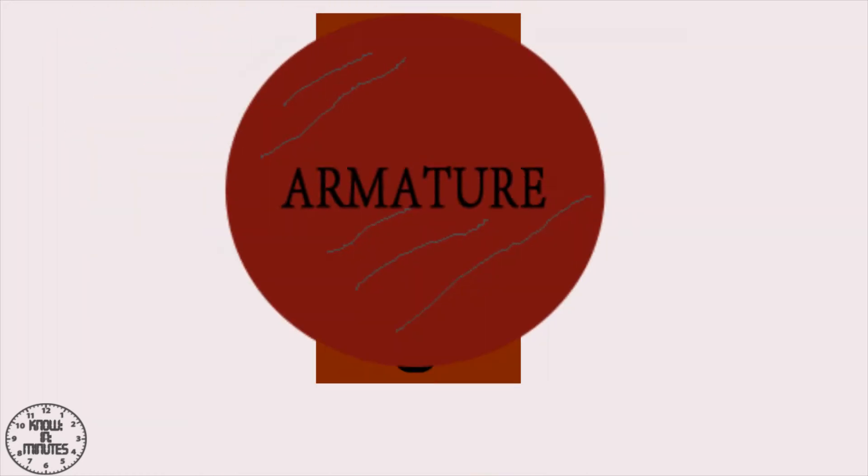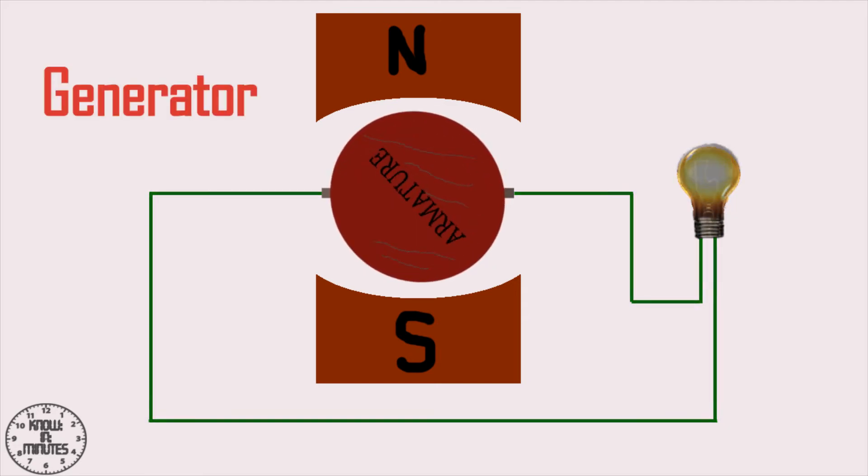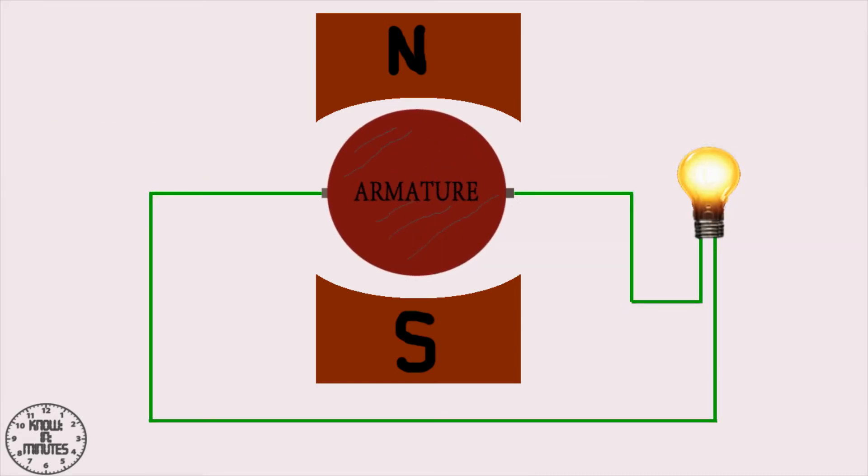Consider that we designed a simple generator which has two poles, an armature, a pair of brushes, and a lamp load. By coupling the armature shaft with a prime mover, according to Faraday's law of electromagnetic induction, as the armature rotates the generator will induce EMF and the lamp begins to glow.